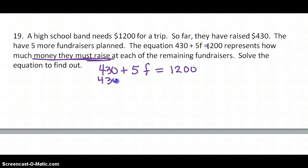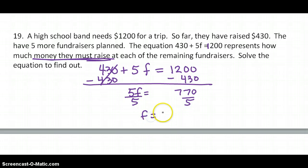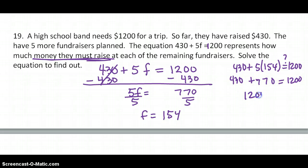So again, I'm going to do the reverse order of operations and subtract 430. And I get 5F equals 770 divide by 5. And F equals 154. Now I am going to check that. 430 plus 5 times 154. Does that equal 1,200? So 430 plus 770. That does check out. So I know that I've got it right.